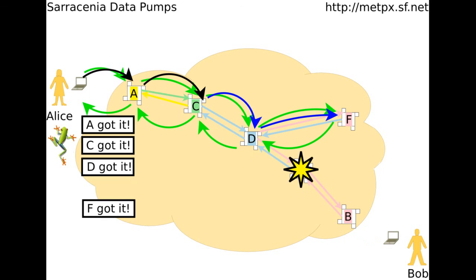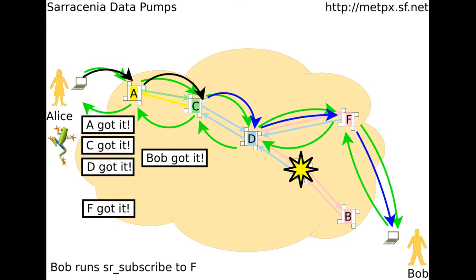But what if pump E has a problem? Alice really wanted to make sure Bob got her folder, so she sent it to B and F. How does Bob decide which pump is the primary and which is the backup? B isn't even in trouble here — it's just not getting any data from E. With Saracenia, Bob can listen to both B and F all the time, and get Alice's folder from the pump that announces it first. With Saracenia's logging, Alice can know when each pump got the folder, and that Bob still got it through pump F, even though it never went through B.